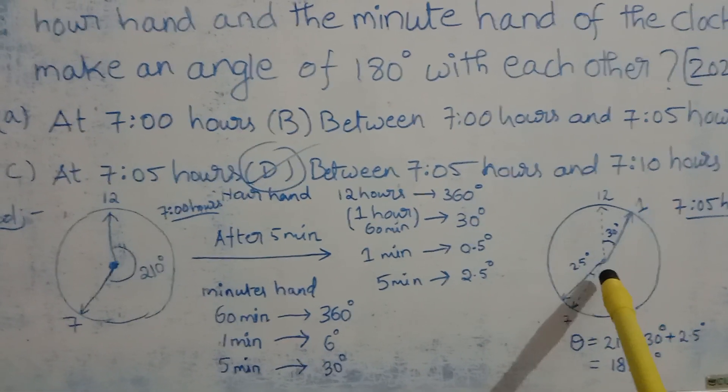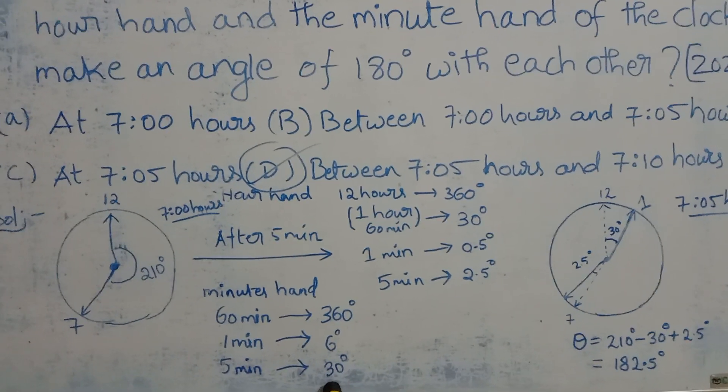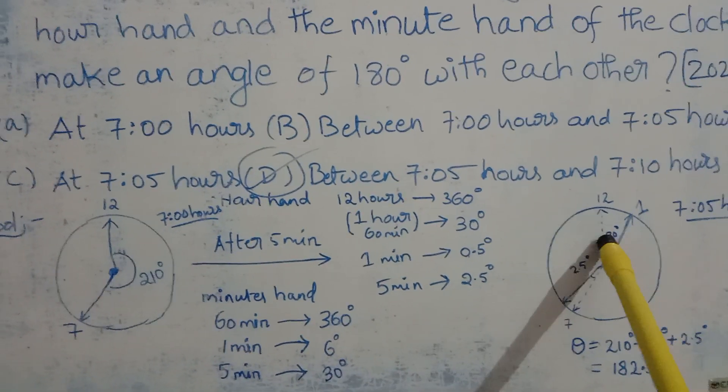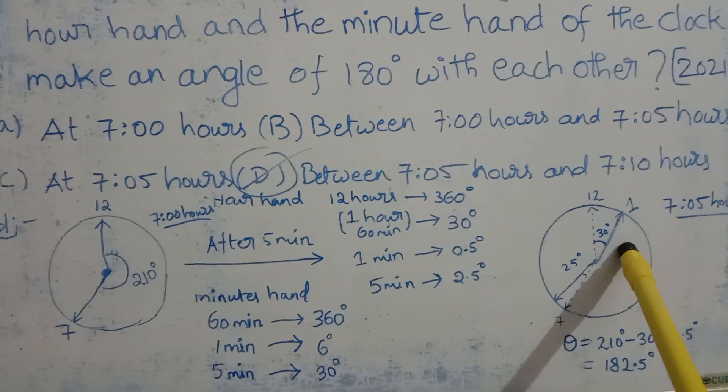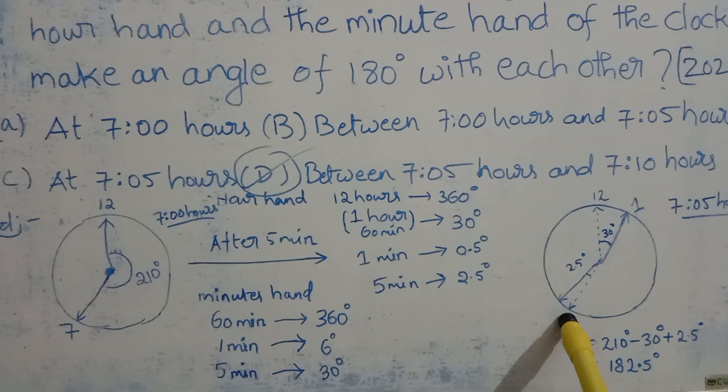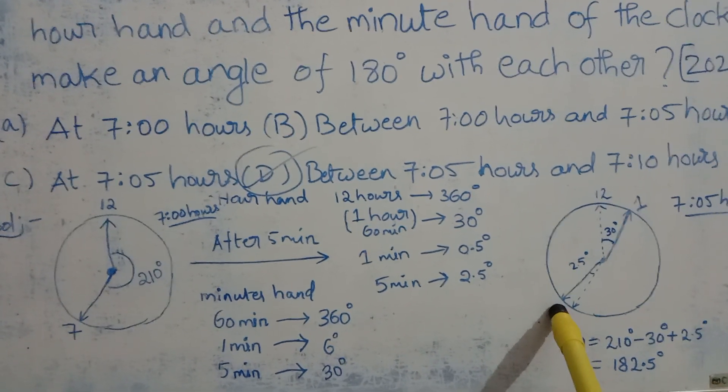At 7:05 the minute hand will sweep an angle of 30 degrees. I have rotated the minute hand by 30 degrees clockwise, and I have to rotate the hour hand by 2.5 degrees clockwise.